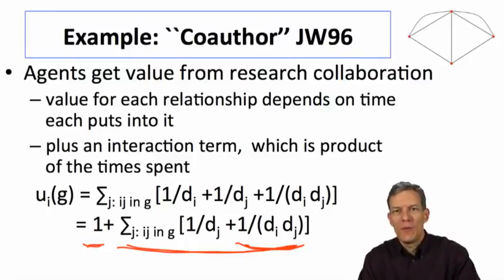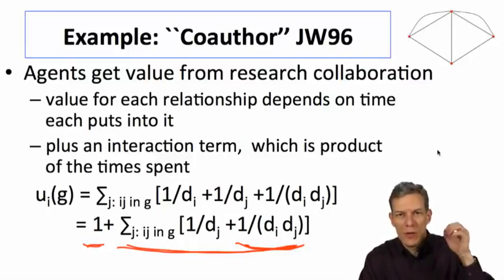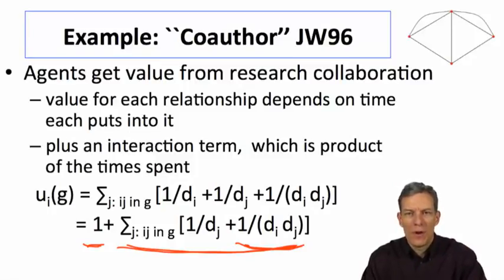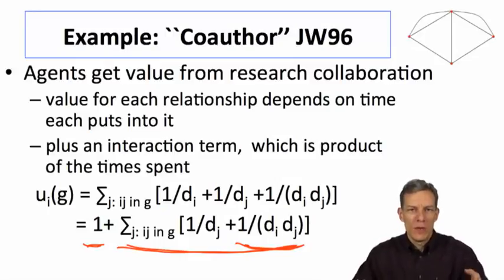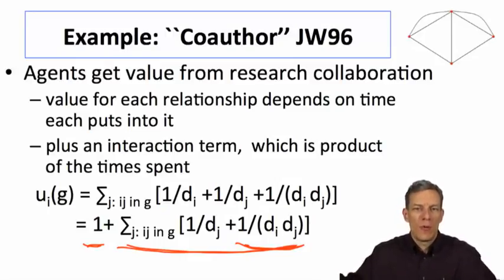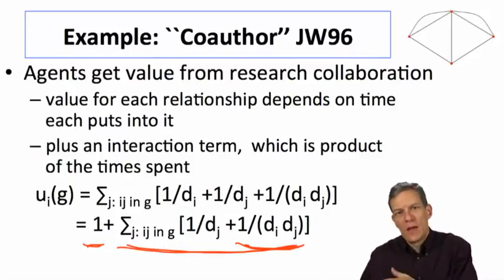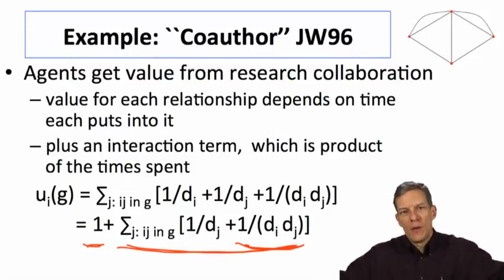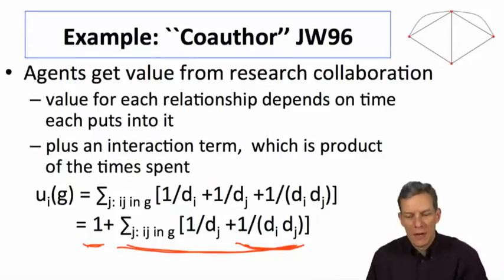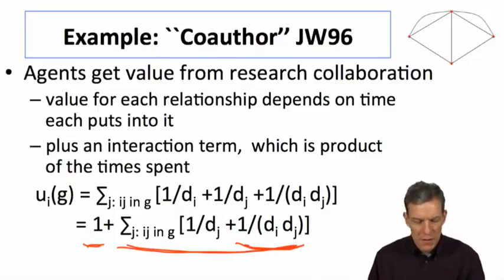The costs are implicit in this model — we don't put in explicit costs to links. The costs from adding extra links come from the fact that you're diluting your synergies with different collaborations. You're spreading your time out, and the more thinly you spread your time, the lower the value from any relationship you get.